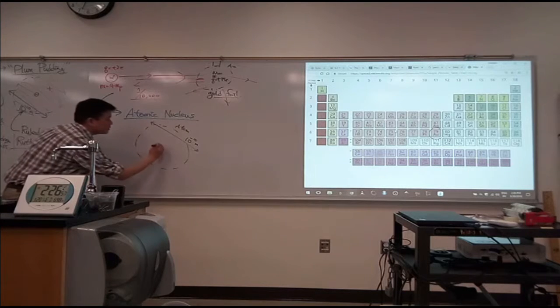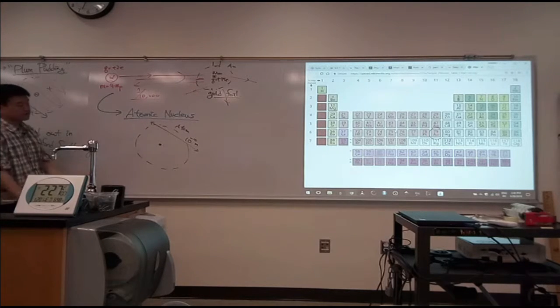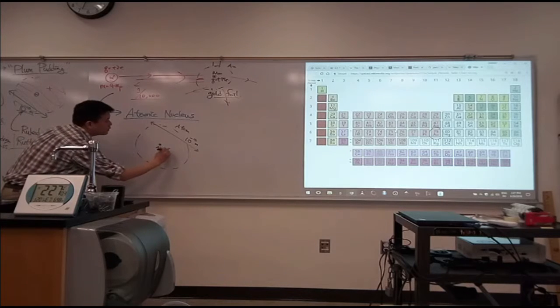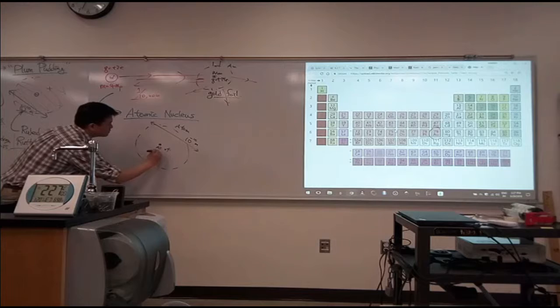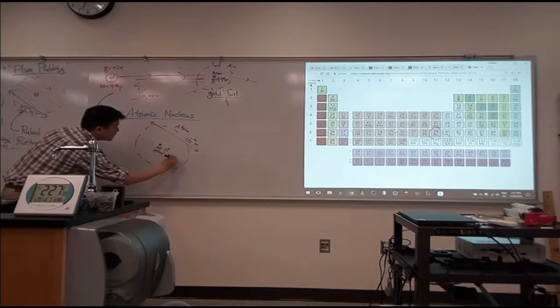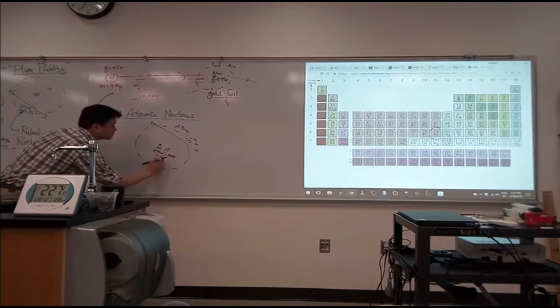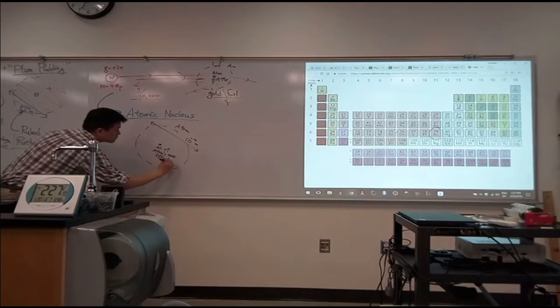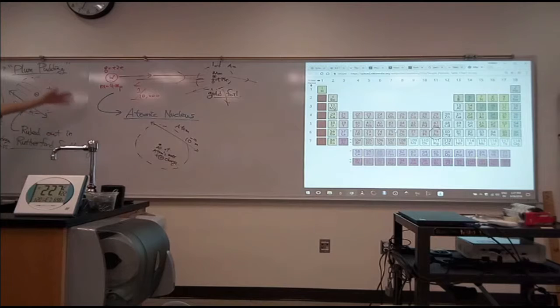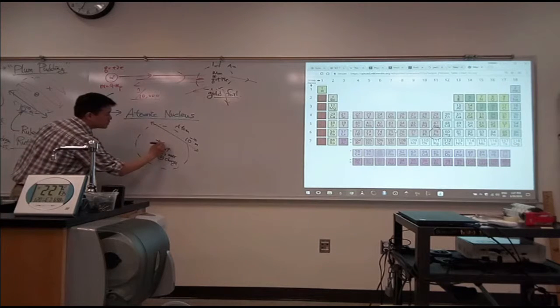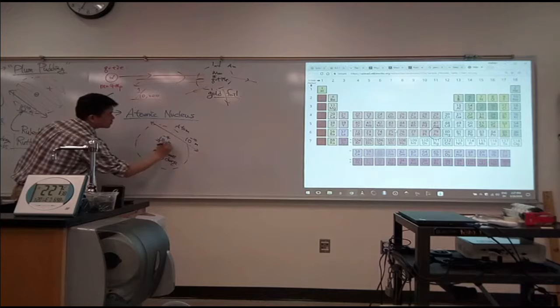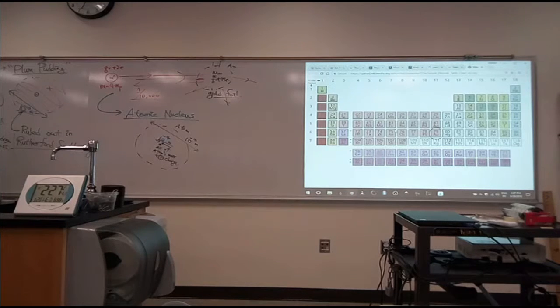What I'm going to do instead is put it in a very small region of space - all of, or nearly all of, the atom's mass and positive charge. Rutherford, from the experimental results, could actually put a limit to how big this can be. Since we have benefit of modern physics, the size of the atomic nucleus is about 10 to minus 14 meters, about 10,000 times less in diameter than the size of the atom.